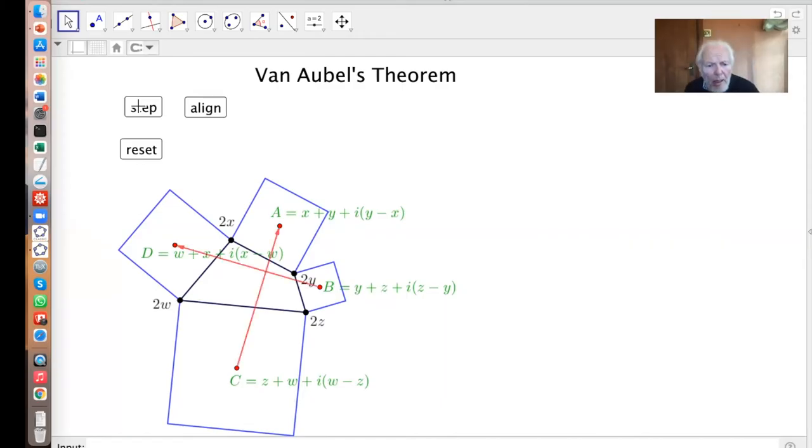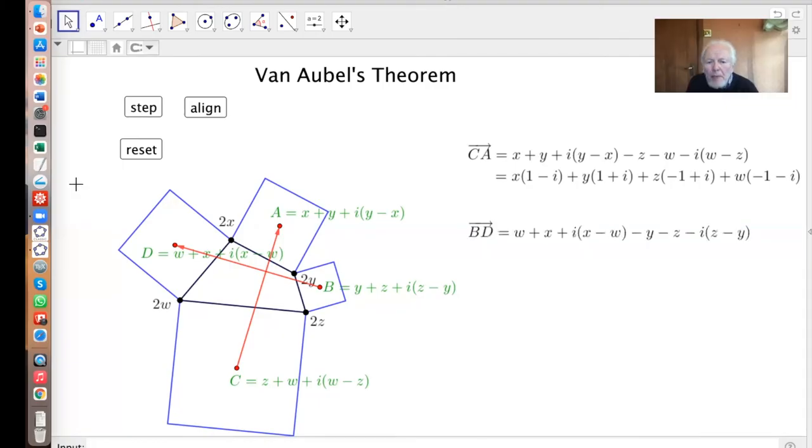OK, now put the red lines back in, but as vectors this time. And our objective is to prove that this vector as a complex number is I times that one. That will establish it's the same length at right angles. OK, so CA, that's that minus that. BD is that minus that. And if we collect the terms, X, Y and Z, we get this, it's X times 1 minus I and so on. OK, BD is the same. It's that minus that. And again, we can collect the terms and get that. So our objective to prove that that is I times that. And well, it is. Look, so if we multiply this by I, we get X times I plus one. And then we get I minus one and so on. That's true. So Van Aubel's theorem is true.